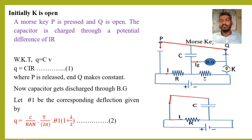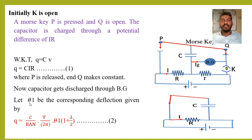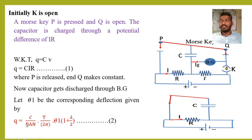Since V equals I into R, we can write Q equals C·I·R. Let us take this as equation 1. When P is released and Q makes contact, the capacitor gets discharged through the ballistic galvanometer. Let theta₁ be the first deflection observed. From the theory of the ballistic galvanometer, if Q amount of charge flows through it, the expression for Q is given by (C/BAN)·(T/2π)·theta₁·(1 + lambda/2).